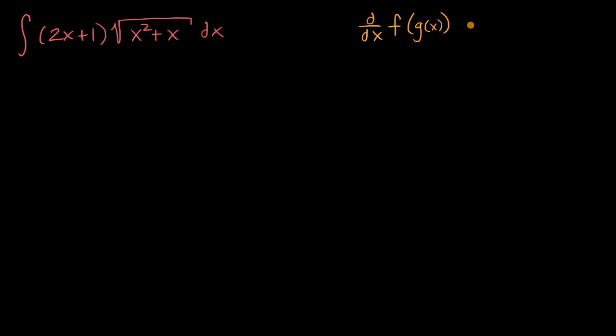and we take the derivative of that with respect to x, that is going to be equal to the derivative of the outside function with respect to the inside function, so f prime of g of x times the derivative of the inside function.